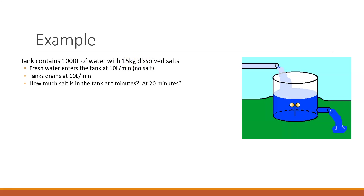Now you've got to understand what's going on with the salt in this tank. Just without doing any math, we know that if you've got a tank with salt in it and you start pouring pure water in while draining the solution out, the salt in the tank should be going down. You're going to start with 15 kilograms, and as the system flows, we should expect this model to be a decreasing model. If we were to graph it, we'd expect a decreasing function — starting at 15 and going down.